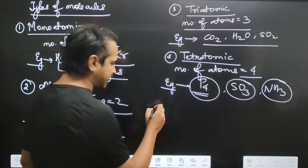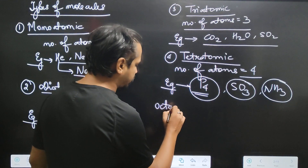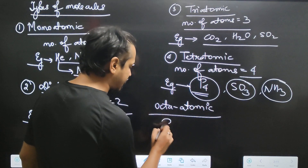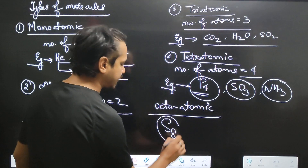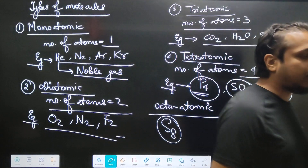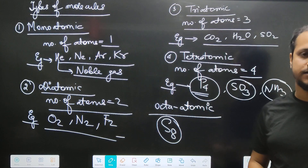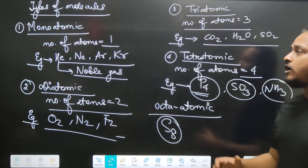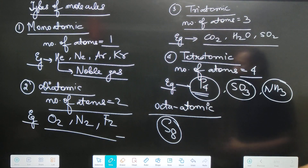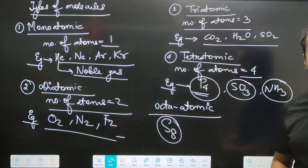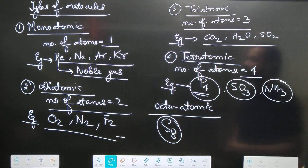P4 — I will call it an octa-atomic molecule. S8 means eight sulfur atoms. So ultimately, if we have molecules, atomicity is nothing but the number of atoms present inside the molecule.